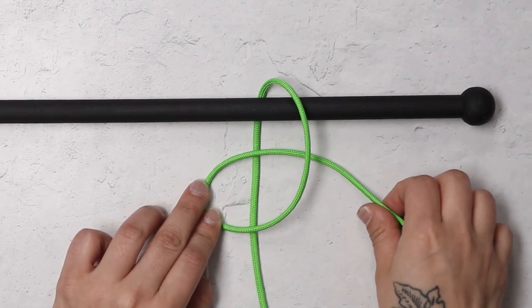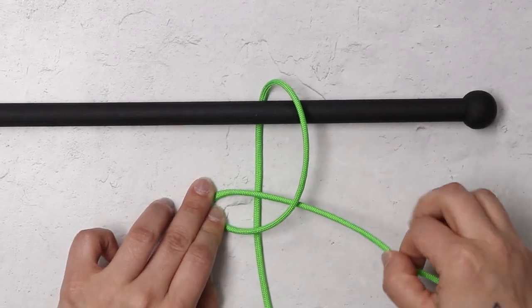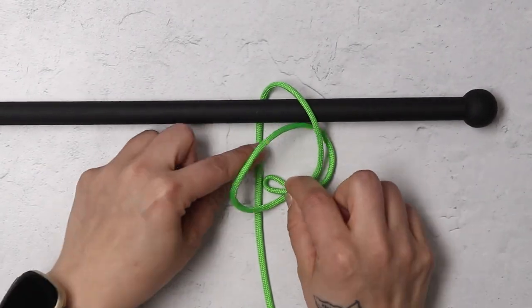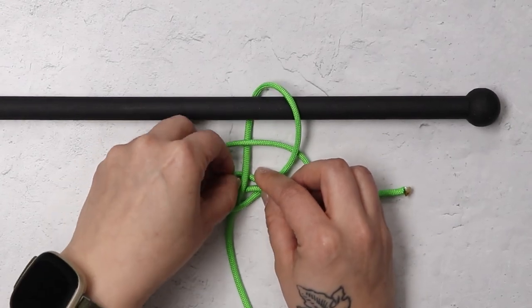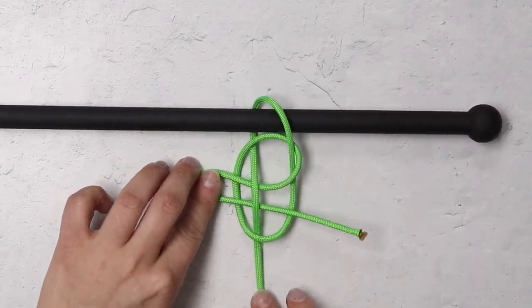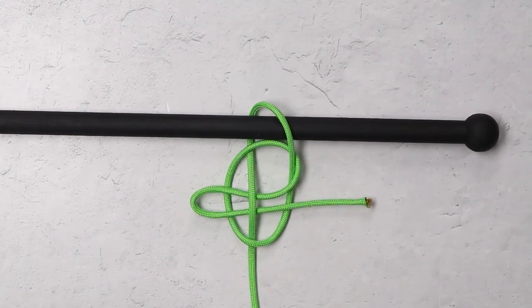And this knot does only have one more step, so that is going to be taking a bite of that right hand working end one more time and you'll be passing that under the stationary strand and over the loop that was created on the left hand side.